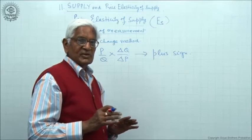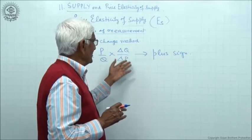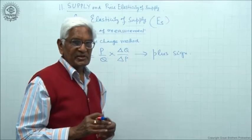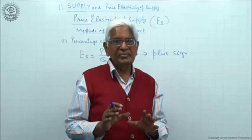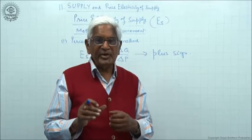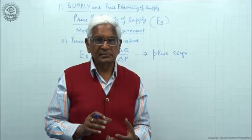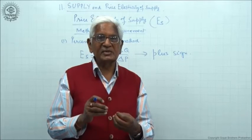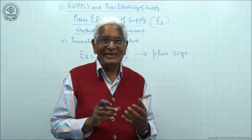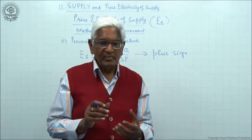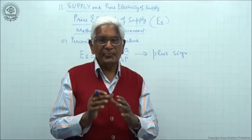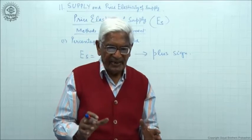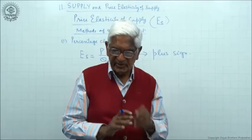We have assumed that when price falls, supply also falls; when price rises, supply also rises. So there is a direct relation between price and supply. If price falls, delta P is minus and delta Q is also minus — minus cancels out, so the answer is plus. If price rises, delta P is plus and delta Q is plus. So in case of an upward sloping supply curve, the answer of price elasticity will always be plus.